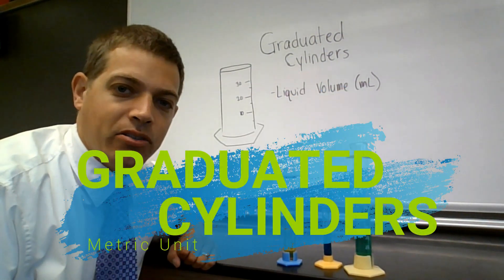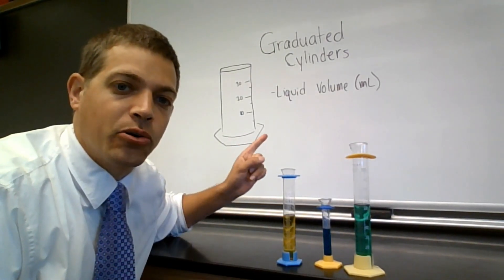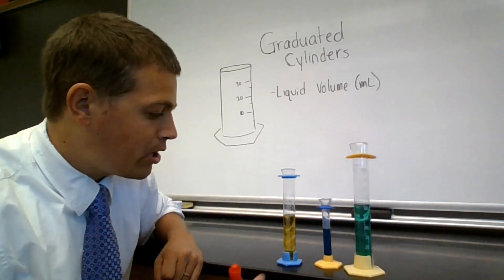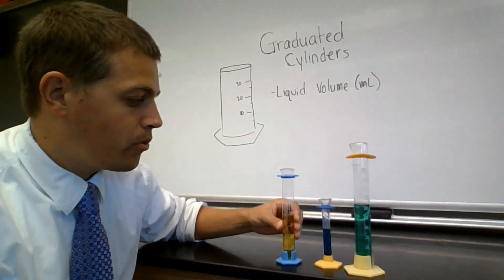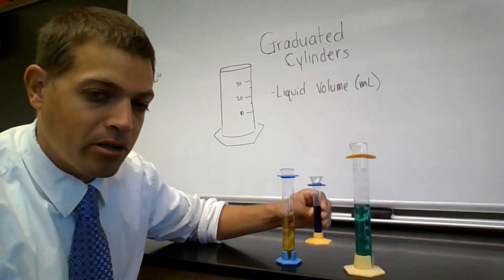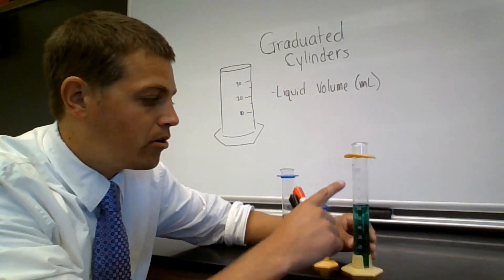Welcome to our video on graduated cylinders. A graduated cylinder is a tool used to measure liquid volume. We have three right here: one that measures 50 milliliters, one that measures up to 10 milliliters, and one that measures up to 100 milliliters.